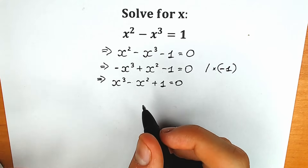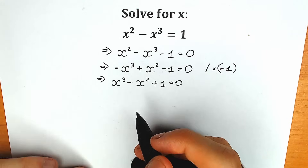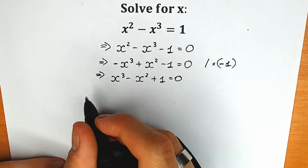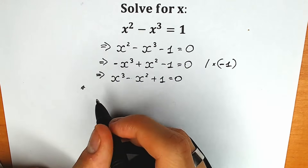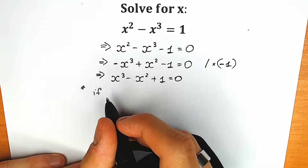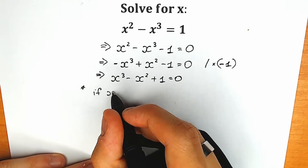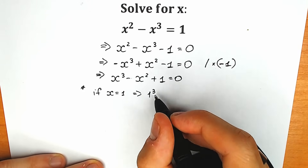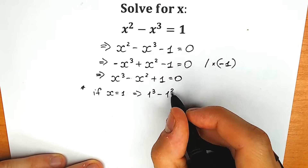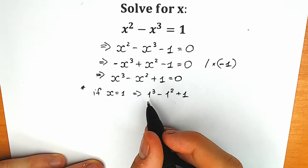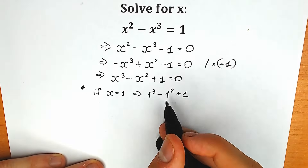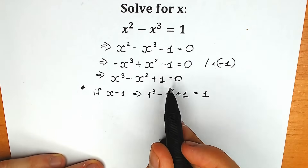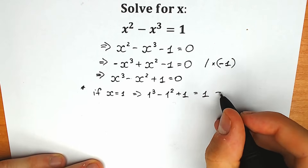Right now I try to check a root by inspection. Let's check x equal to 1 and x equal to minus 1. If x is equal to 1, when we plug it in, we have 1 cubed minus 1 squared plus 1. This equals 1 minus 1 plus 1, which equals 1. But this is not equal to 0, so this is not a correct root.